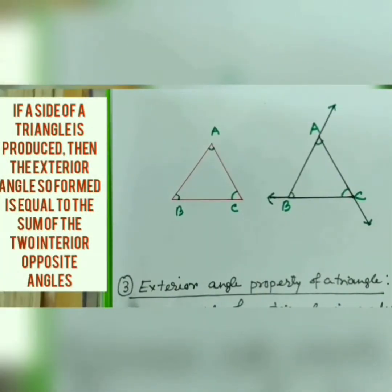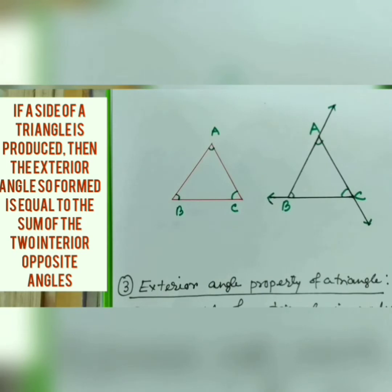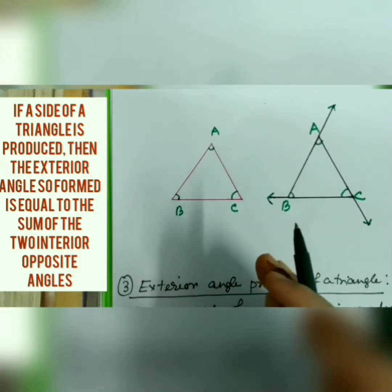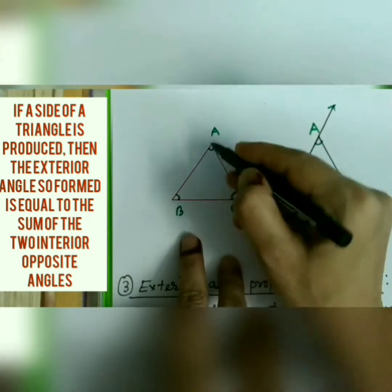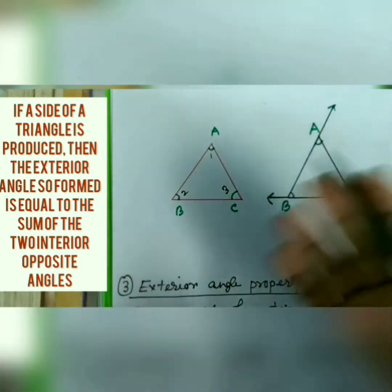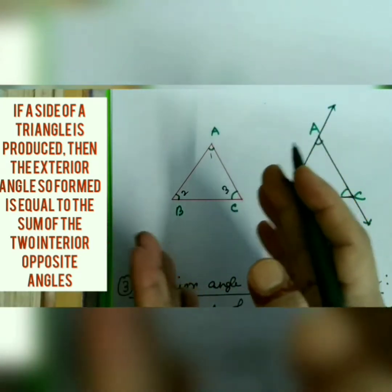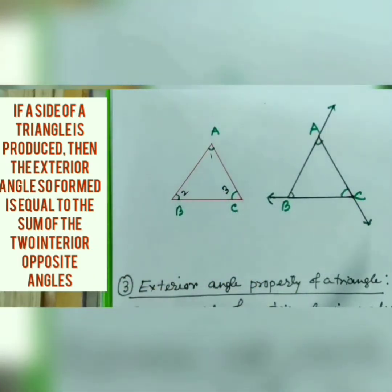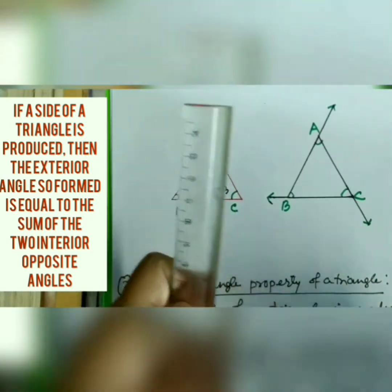Property number 2: exterior angle property of a triangle. If a side of a triangle is produced, then the exterior angle so formed is equal to the sum of the two interior opposite angles. First of all, you should know what exterior angles and interior angles are. In figure ABC, if I name the angles 1, 2, and 3, then these three are the three interior angles of the triangle.